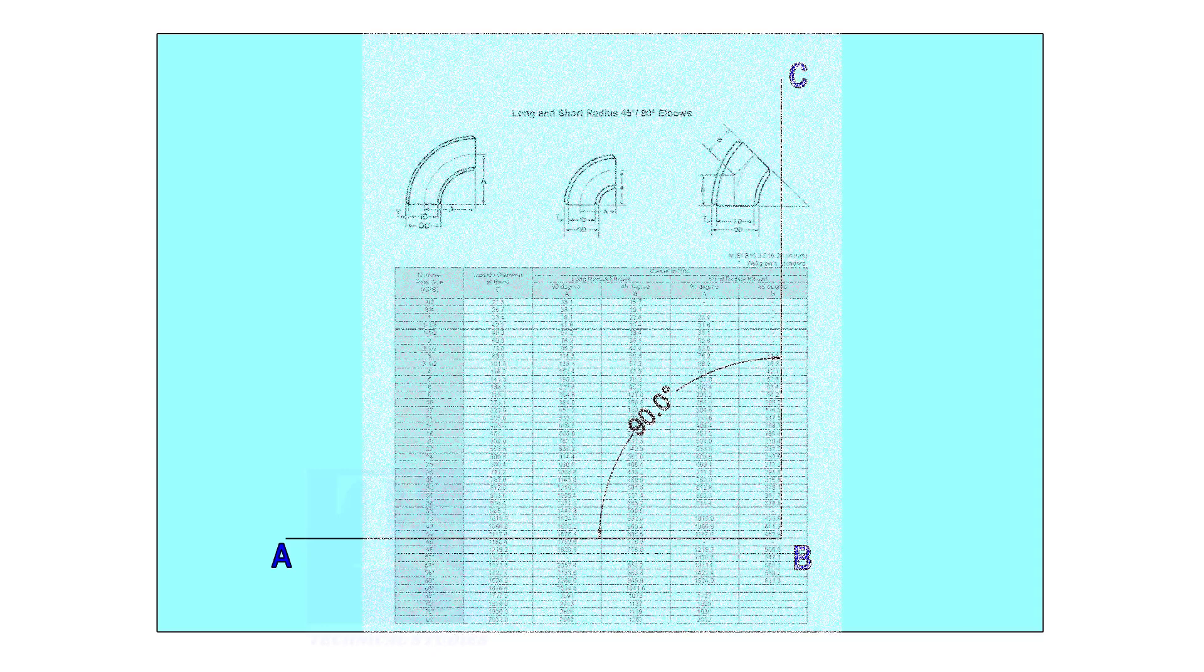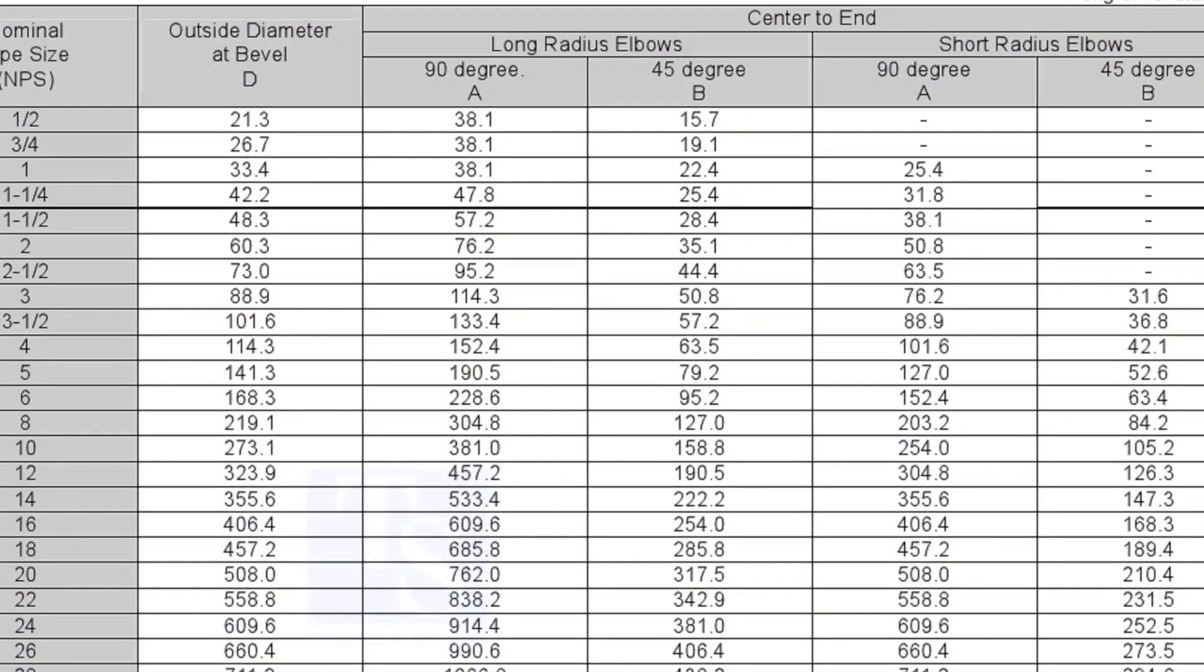Let us mark a 25-degree elbow on a 16-inch large radius elbow. Mark line AB and a perpendicular line BC. Let us check the center radius of the 16-inch long radius elbow.